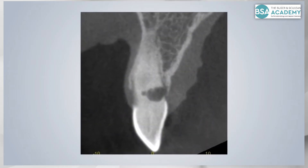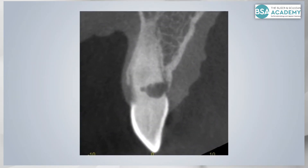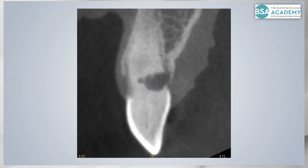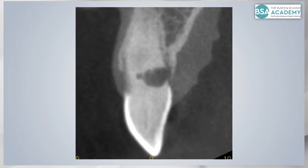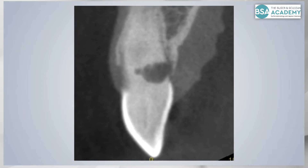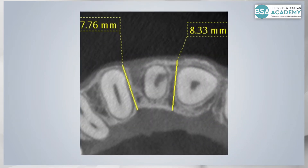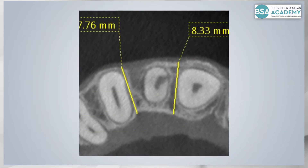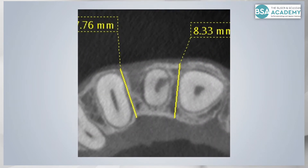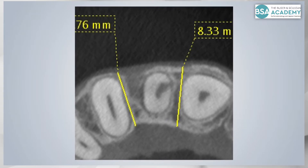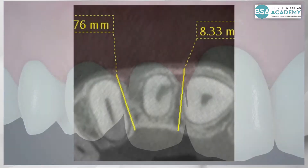The extension of the root resorption is clearly visible in the CBCT. The coronal cut shows the bone lesion distally to the root and a sufficient crest width of more than 7 mm.